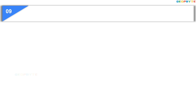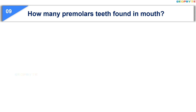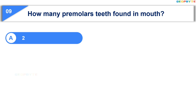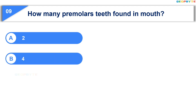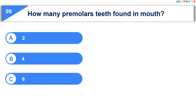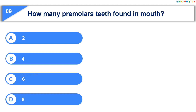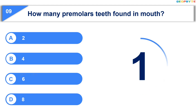Let us see the next question: how many premolar teeth are found in the mouth? Option A: 2; Option B: 4; Option C: 6; Option D: 8. Your time is up and the correct answer is Option B: 4.